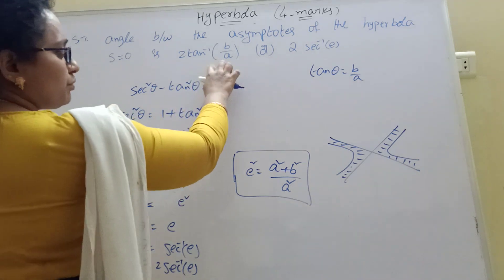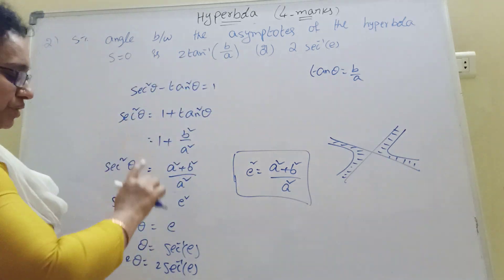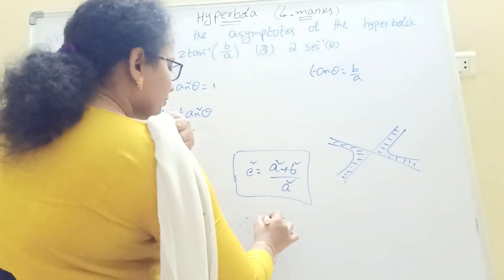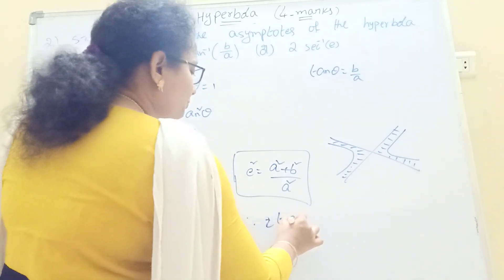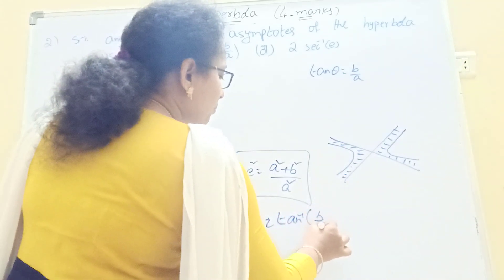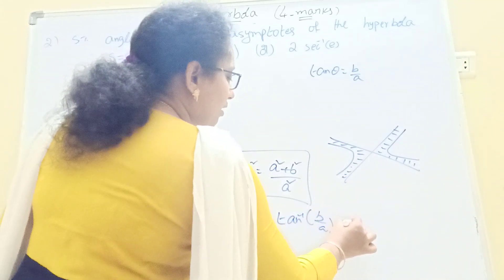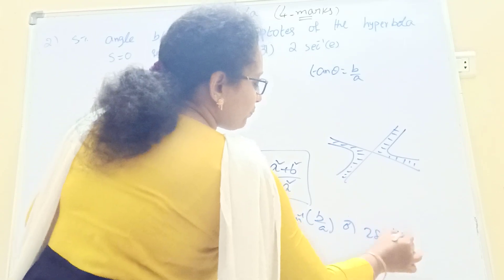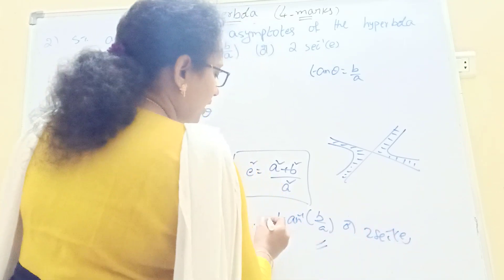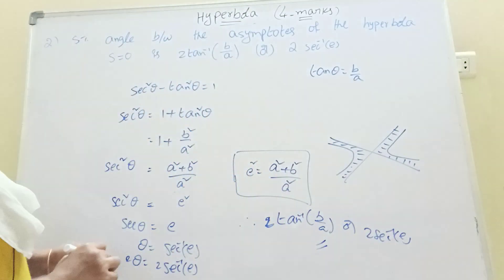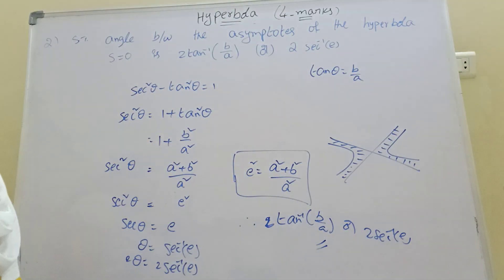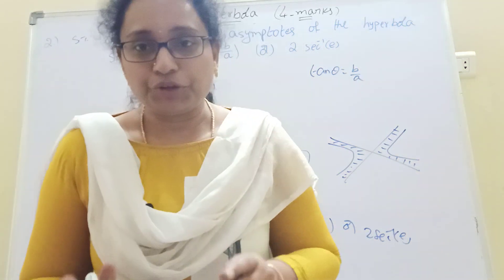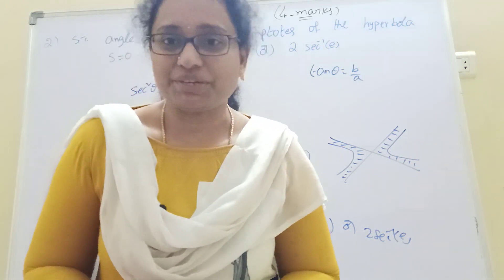Therefore, the angle between the asymptotes is 2θ equal to 2tan⁻¹(b/a) or 2sec⁻¹(e). This is also important. Thank you for watching my channel. Please share my channel. If you need more, please subscribe.